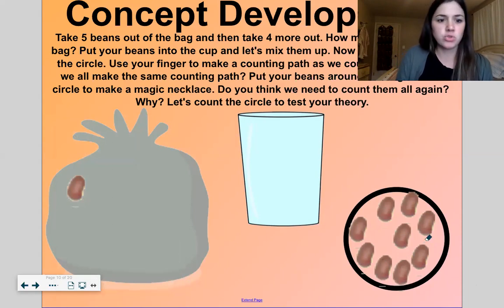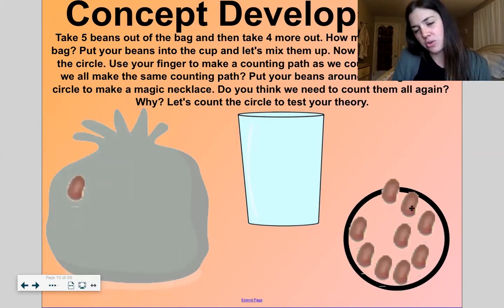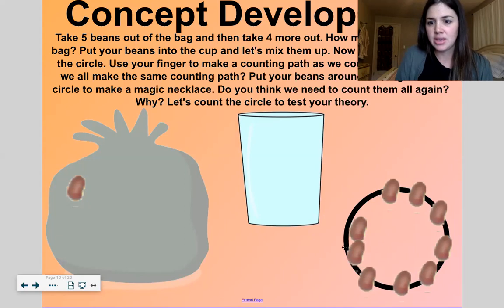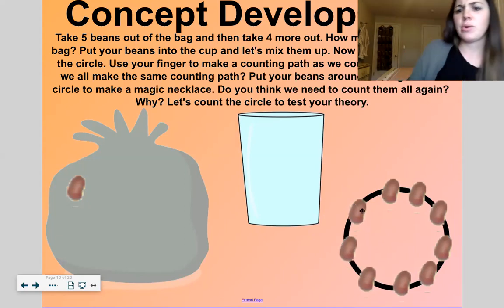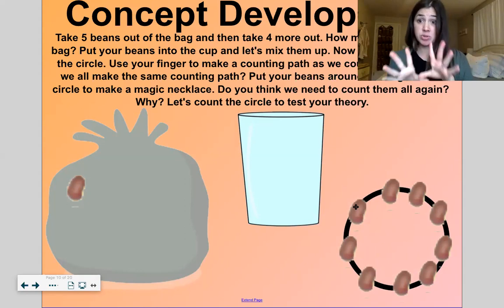And let's put them in a circle. And right now they're scattered. Let's put them in a circle around the edge of the circle. One, two, three, four, five, six, seven, eight, nine.